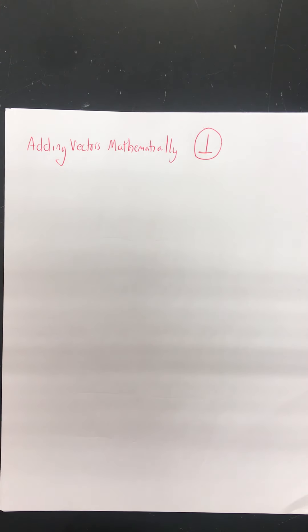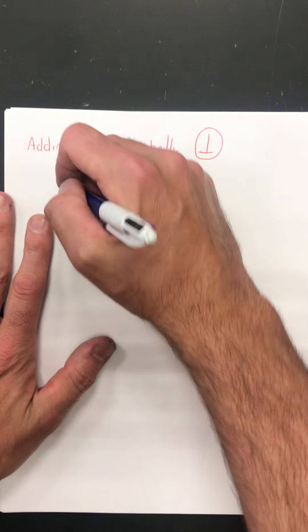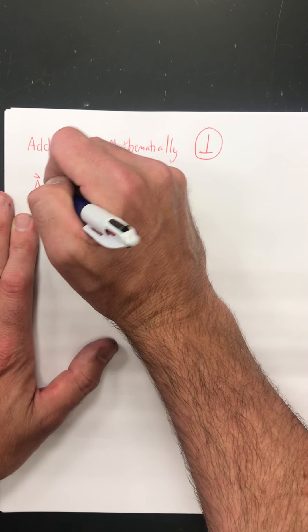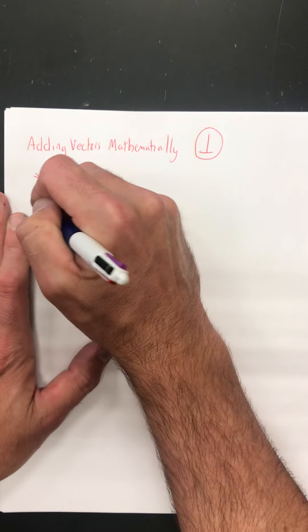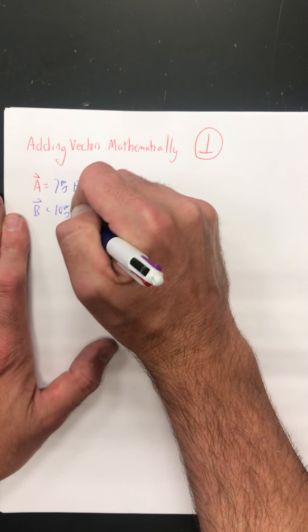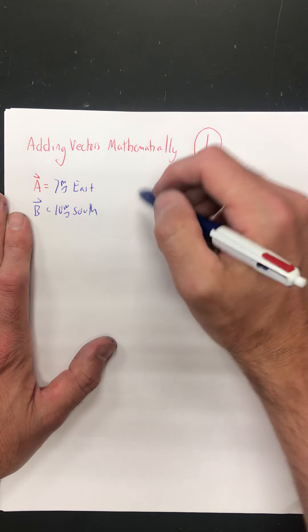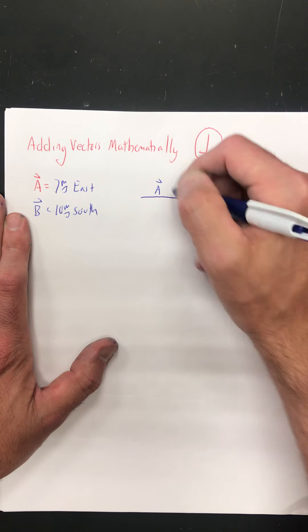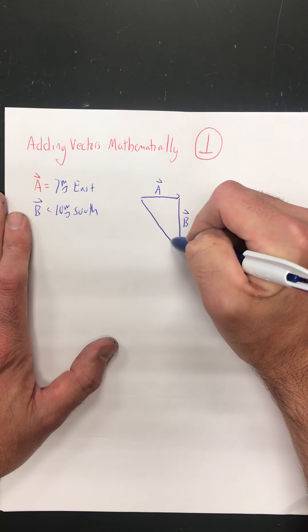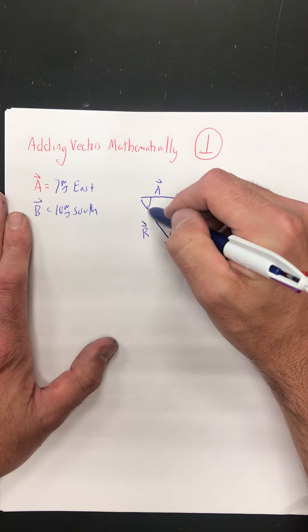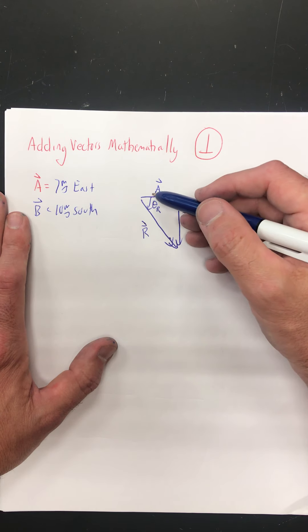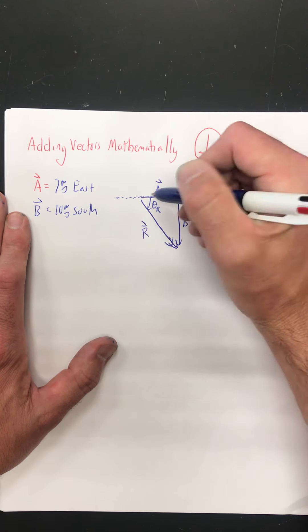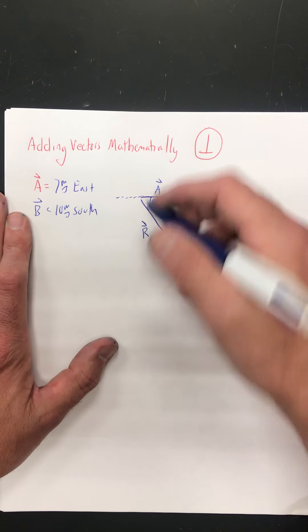So here we go. Whereas adding vectors graphically we set up a scale, let's just do this mathematically. Vector A, I'll turn this to blue, was 7 meters per second east. And B was 10 meters per second south. Even when not drawing to scale, it's a really good idea to do a quick sketch of the vector addition. I'll put in the resultant and the reference angle — the angle to the nearest horizontal — which is the angle I care about.